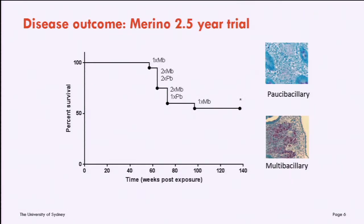The first trial I'm going to talk about is the longest we've ever done, where we held animals for two and a half years. The MB stands for multibacillary, which is one end of the disease spectrum where you see acid-fast organisms in intestinal tissues. The PB stands for paucibacillary, where animals can have clinical disease but you don't see as many acid-fast bacilli, and it's a very lymphocytic lesion.